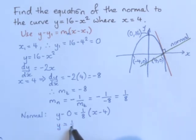So y is equal to 1/8 times x minus 4, and that's the equation of the normal, and we'll stop there.